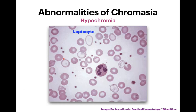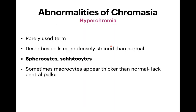Hyperchromia is the opposite end of chromasia. It is a rarely used term describing cells that are more densely stained than normal, such as spherocytes and stomatocytes. Sometimes macrocytes appear thicker than normal and lack central pallor. We don't usually describe cells as hyperchromic — we just write them as either normochromic or hypochromic.